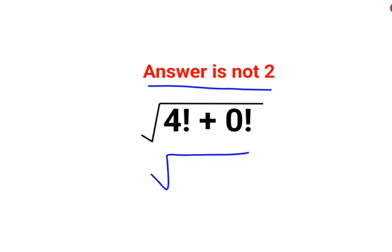Because 0 factorial people thought that 4 factorial plus 0 factorial is just 0. So root of 4 is just 2. No, that's not how these things are supposed to be done.